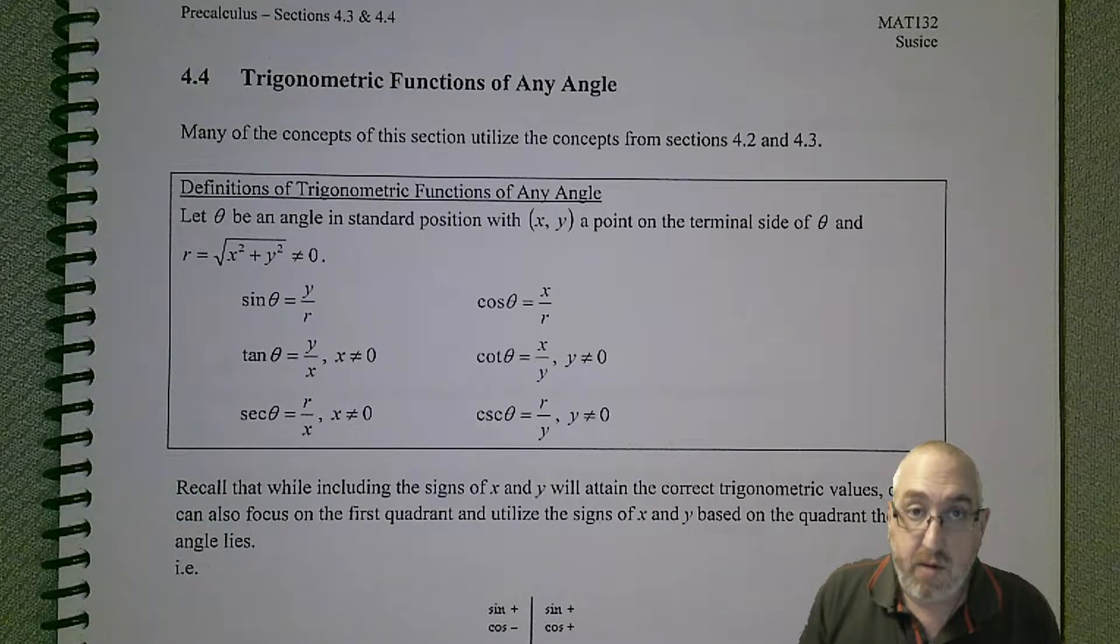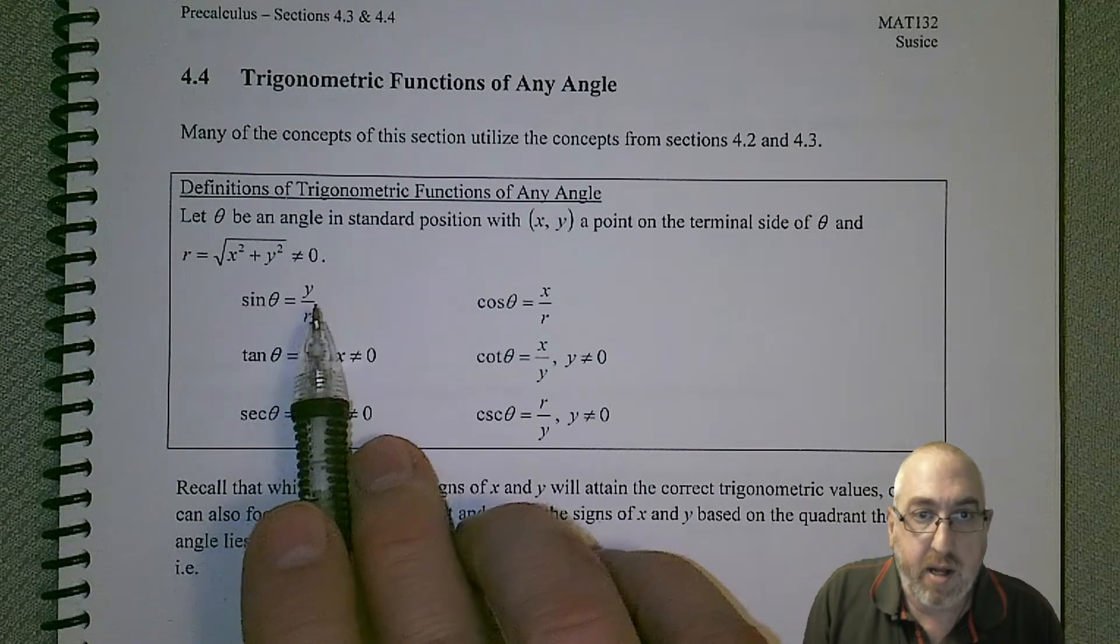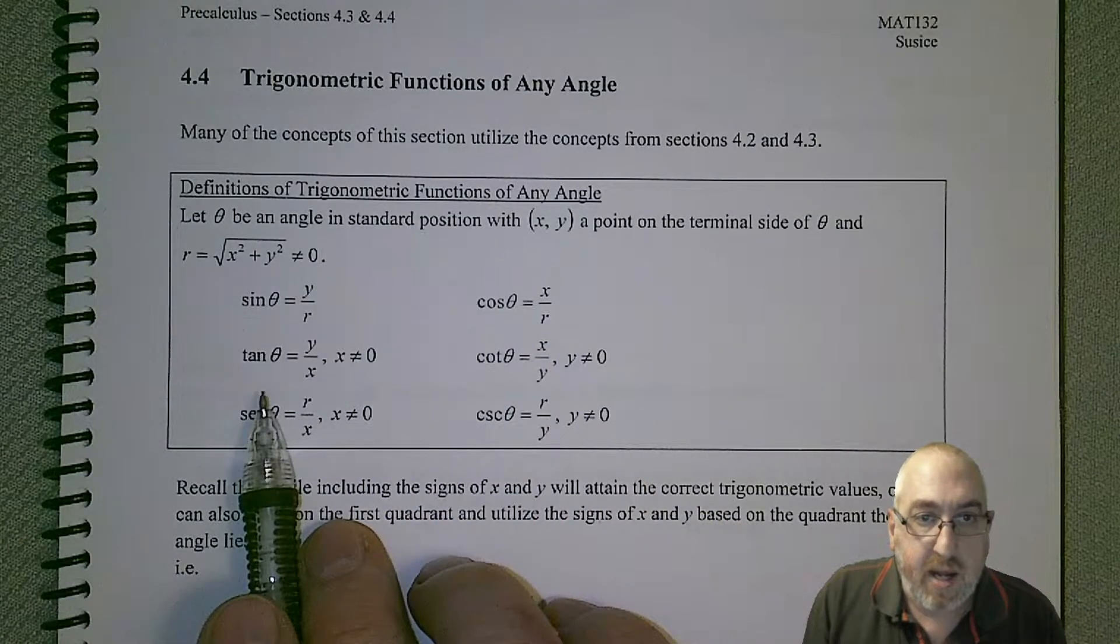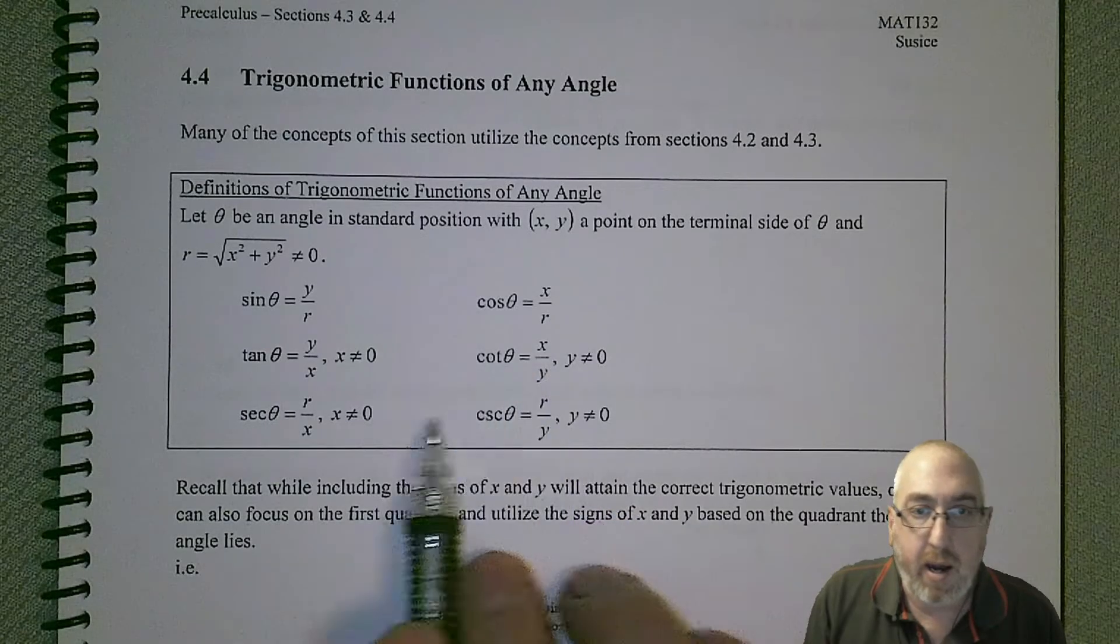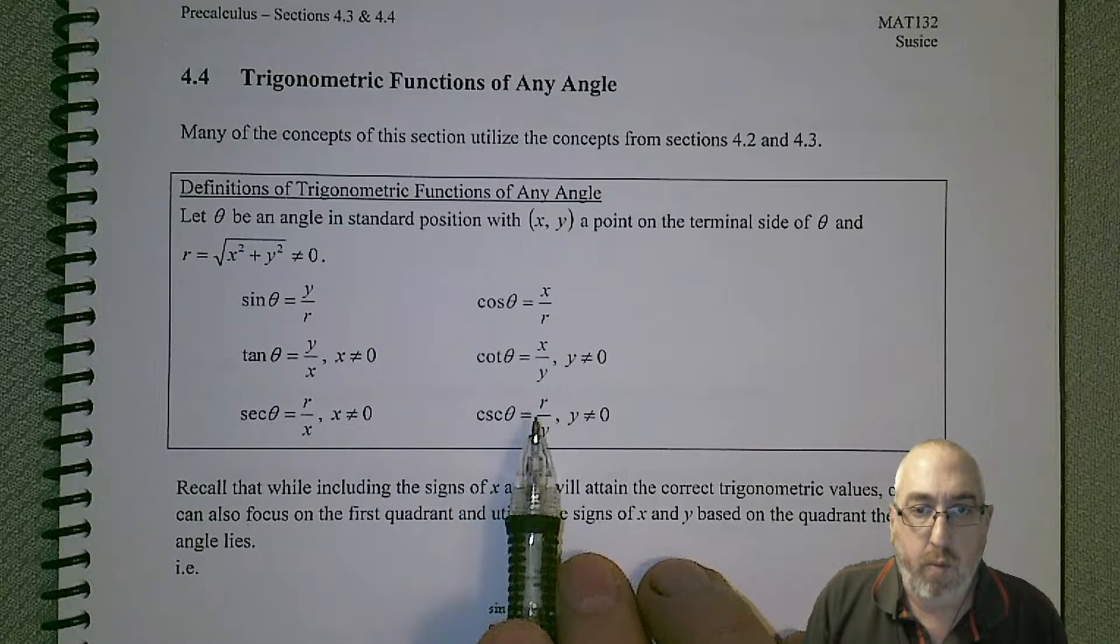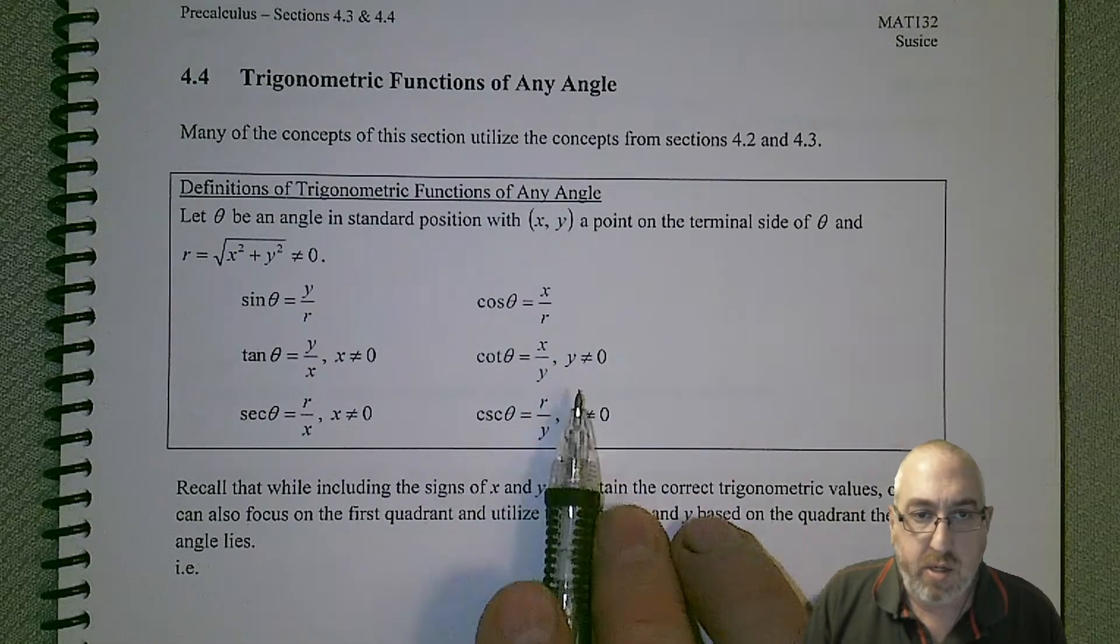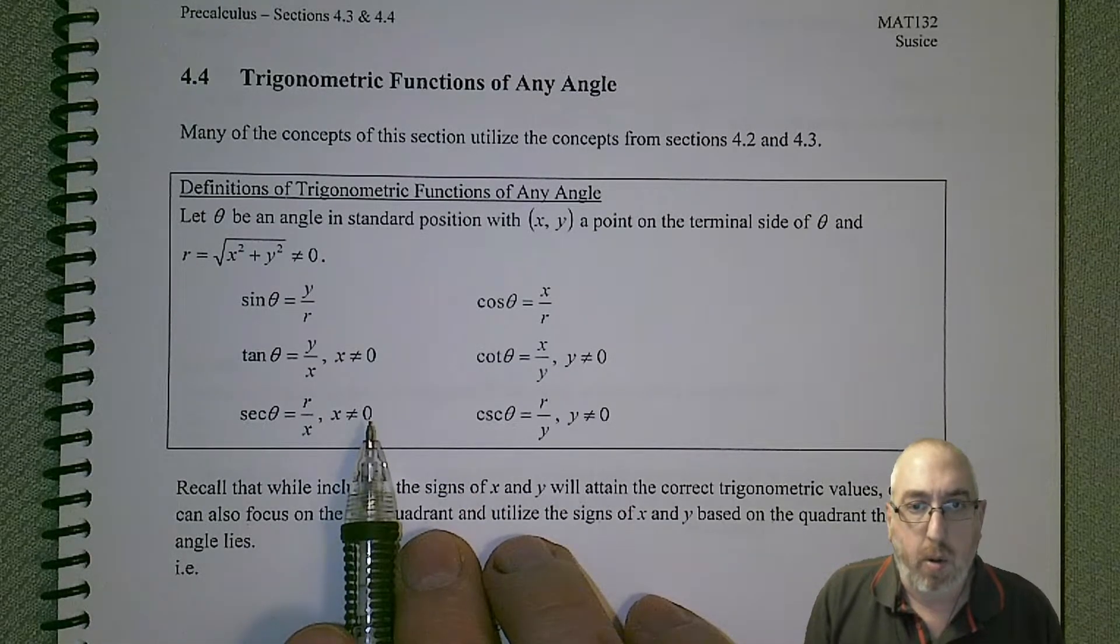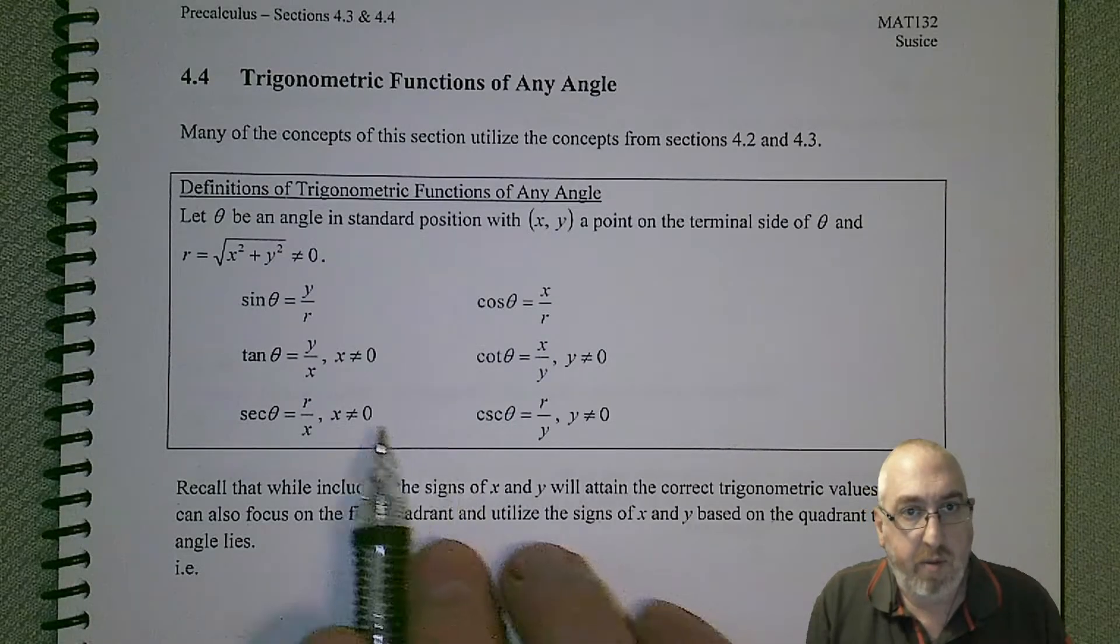Given all those different things, we can now establish our formulas. Sine of theta is y over r, cosine is x over r, tangent is y over x, cotangent is x over y, secant is r over x, cosecant is r over y. We can't have y equal to zero in these cases, and we can't have x equal to zero in these cases. But again, these other three will be easy because they're just the reciprocal of the first three.